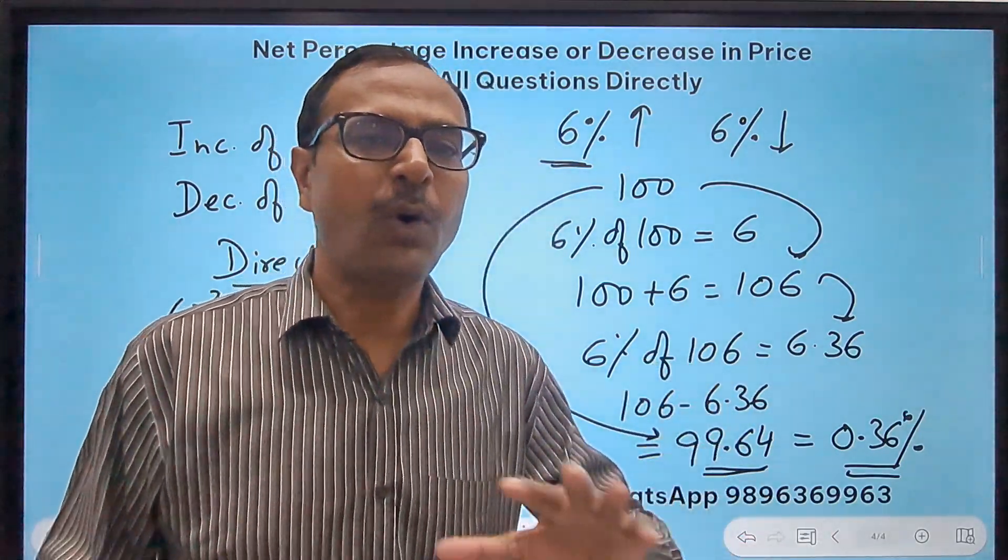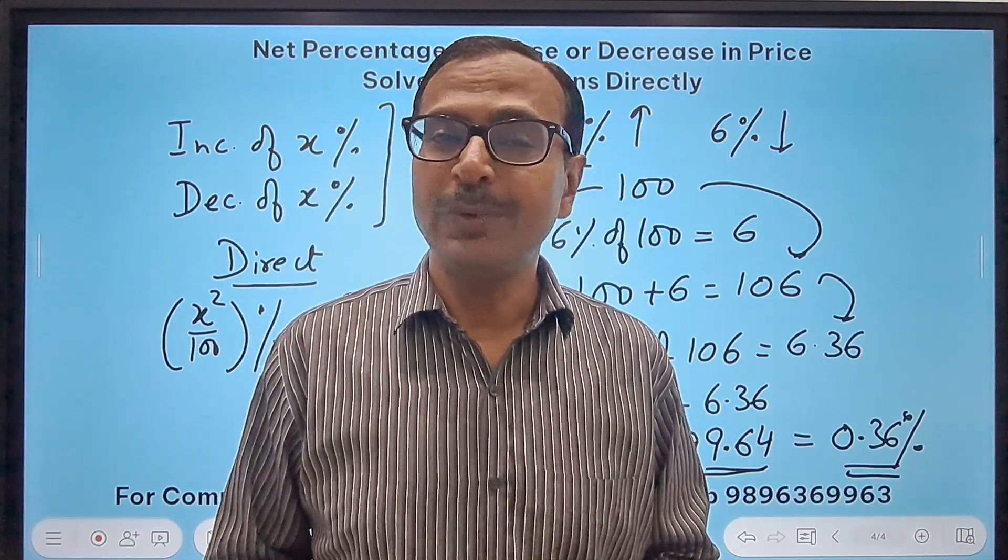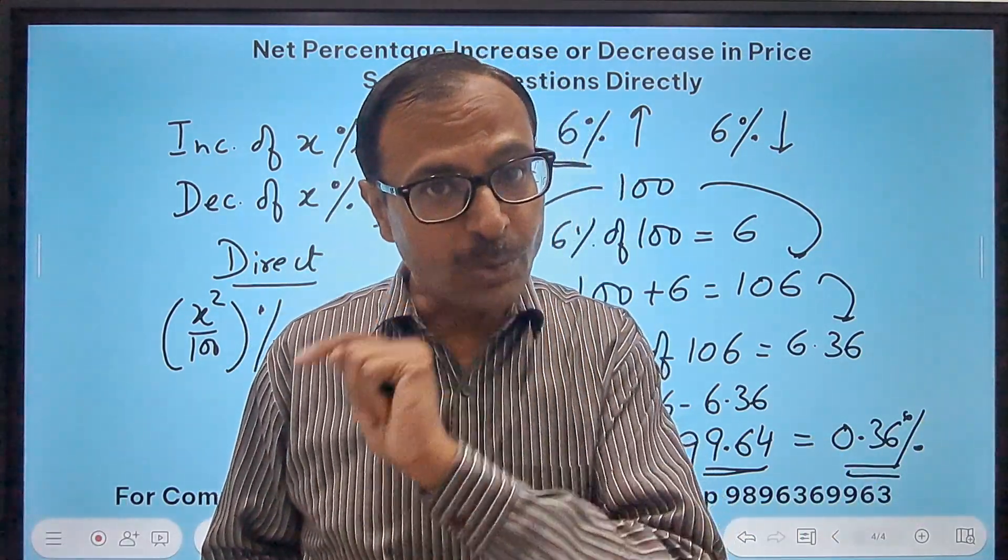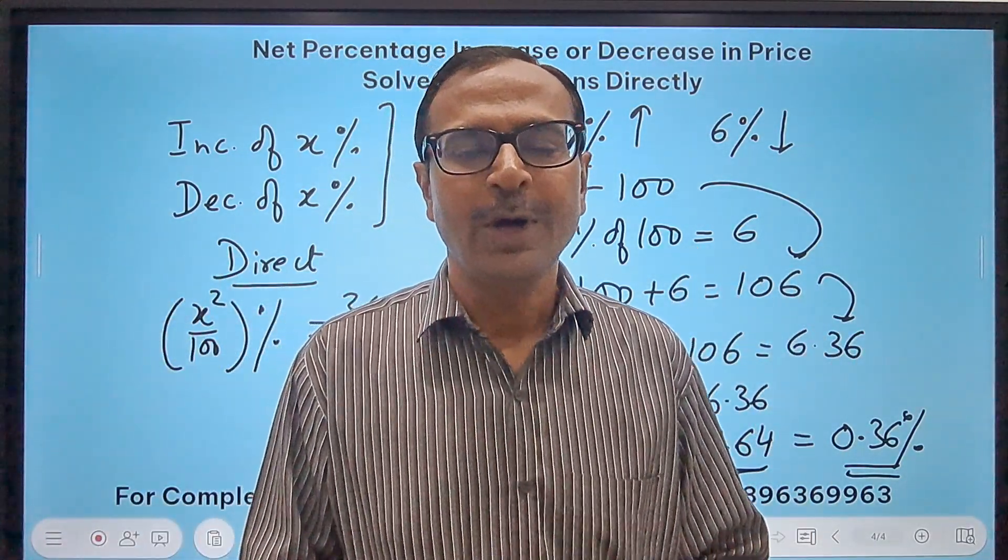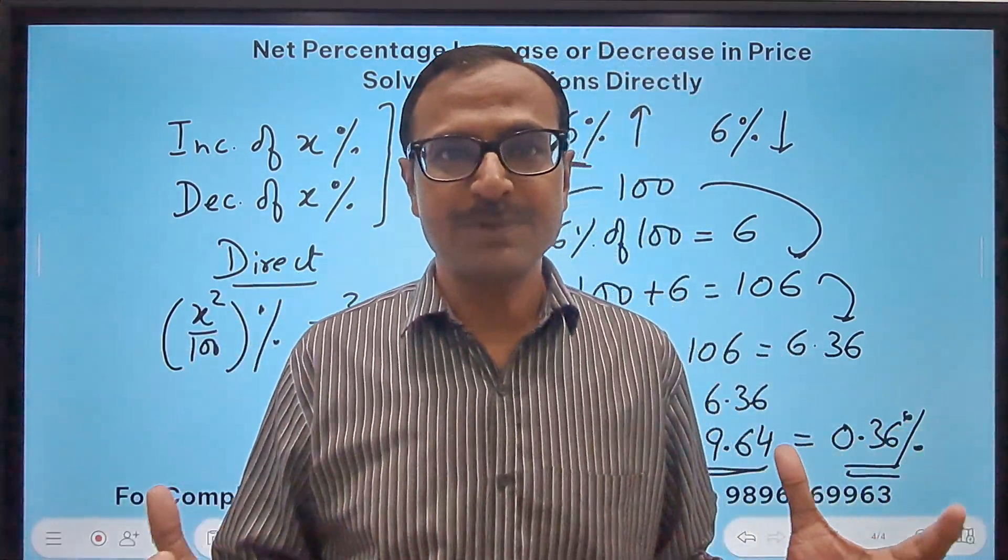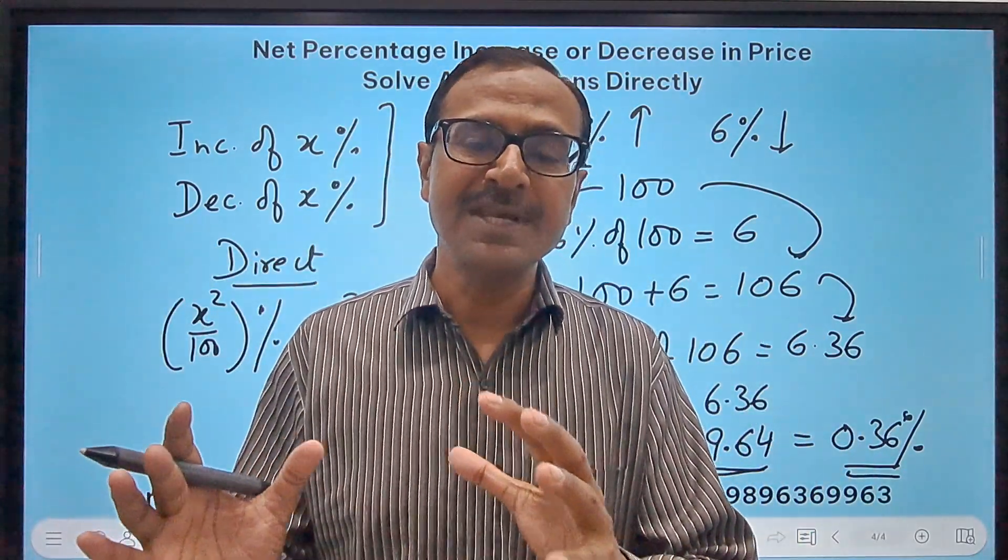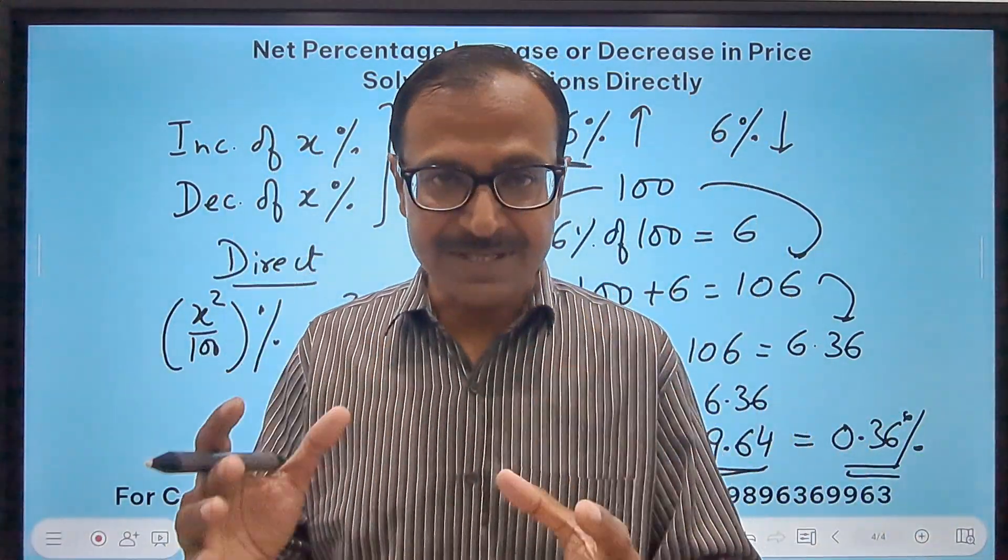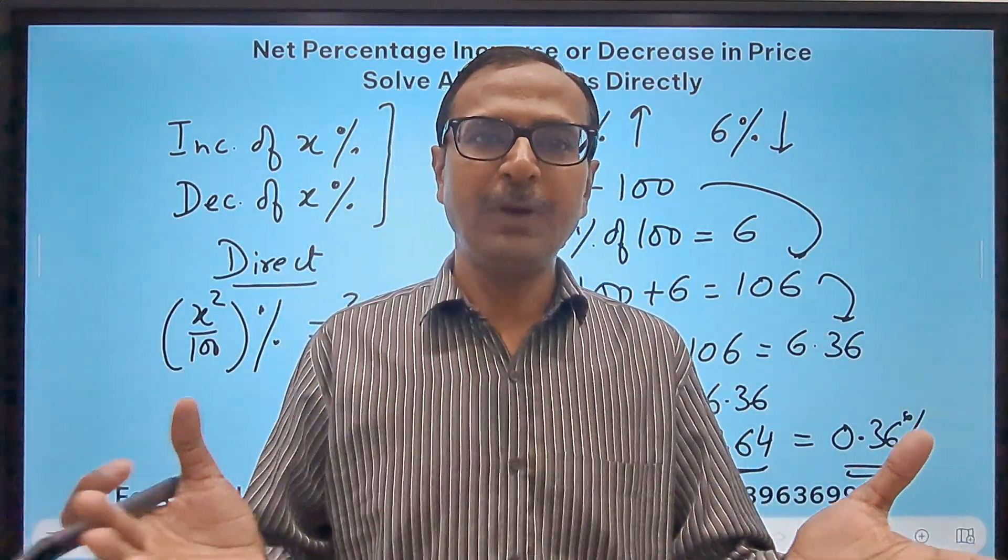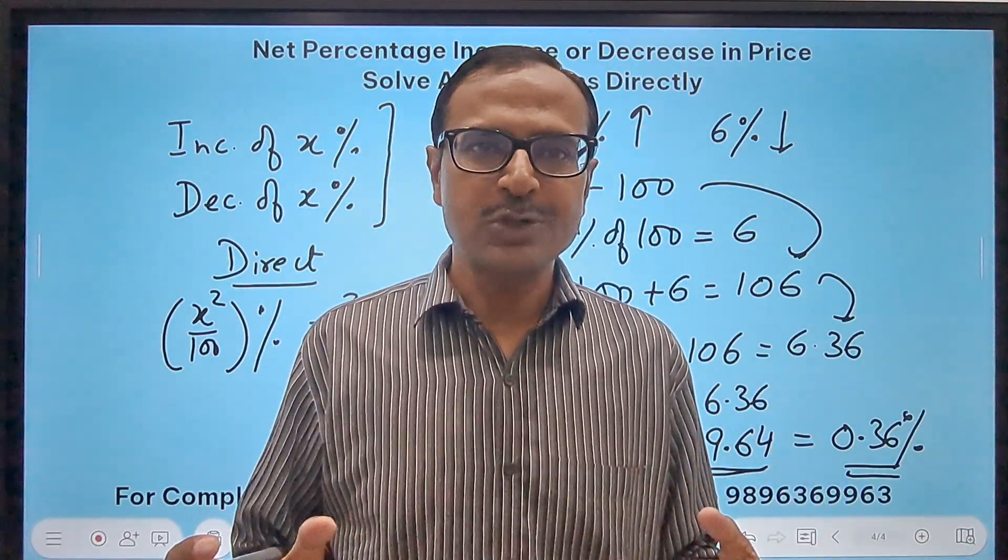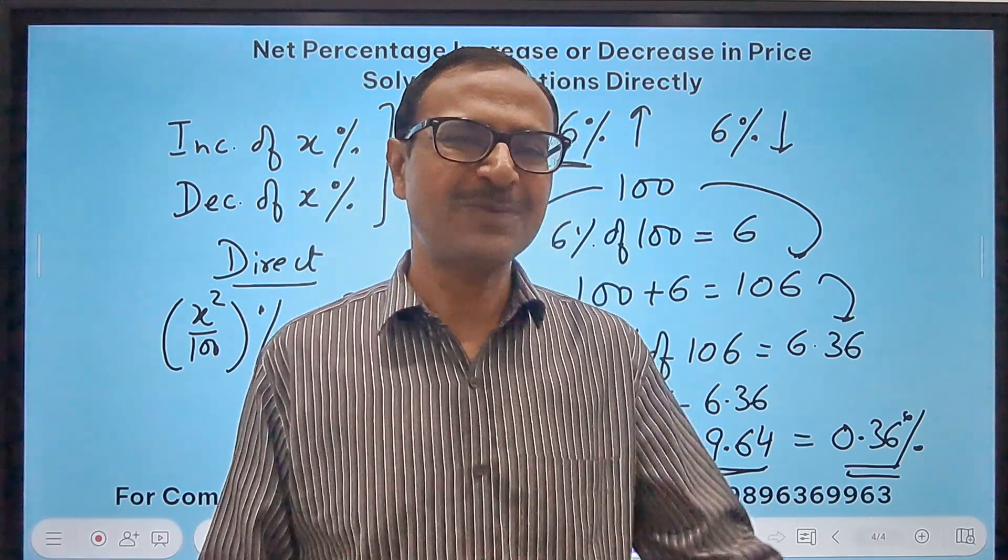So 4 different amazing tricks friends. These are going to help you in cracking all the questions of successive increase decrease in the price of a commodity. You can actually apply that to a wide variety of questions including successive discounts also. Once you get a very good base of the concepts, it is easier to work on them. I would appreciate if you solve 30-40 such questions, be sure you're getting correct answers in the first attempt and saving time. Share it with all your friends who are struggling in quantitative aptitude so they can also save time and come out with flying colors in all those exams. All the best for your practice friends.